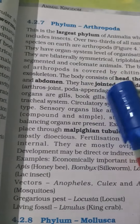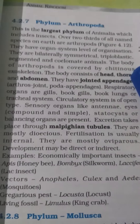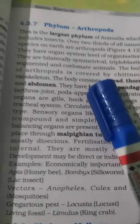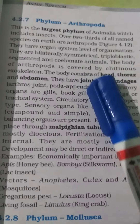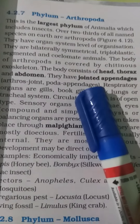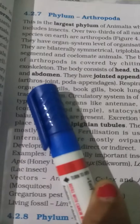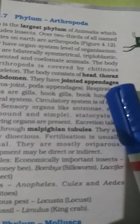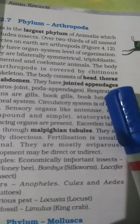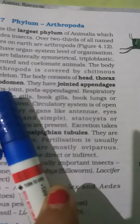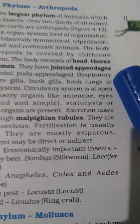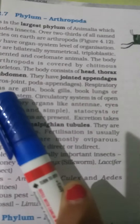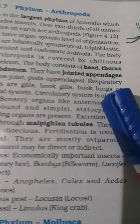The body is bilaterally symmetrical, triploblastic and coelomate — these are the four phylum characters. The body of an arthropod is covered by a chitinous exoskeleton, and the body is divided into head, thorax and abdomen, with jointed appendages.